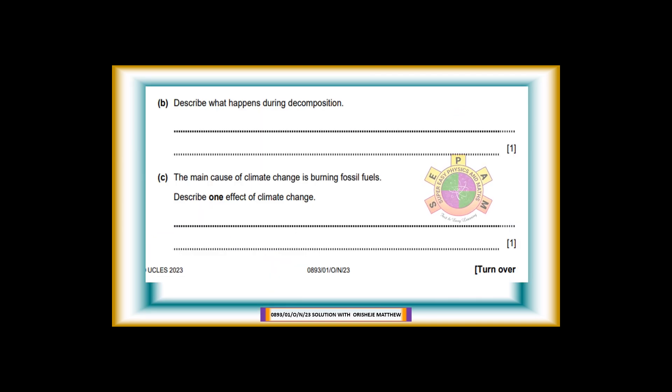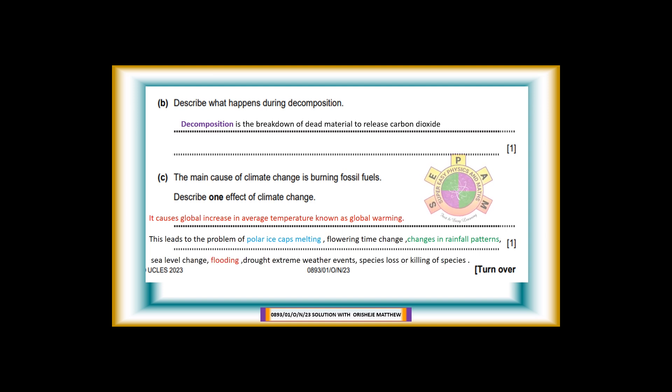4b. Describe what happens during decomposition. For 1 mark. Answer: Decomposition is the breakdown of dead material to release carbon dioxide. 4c. The main cause of climate change is burning fossil fuels. Describe one effect of climate change. For 1 mark. Answer: It causes global increase in average temperature, known as global warming. This leads to the problem of polar ice caps melting, flowering time change, changes in rainfall patterns, sea level change, flooding, drought, extreme weather events, species loss, or killing of species.